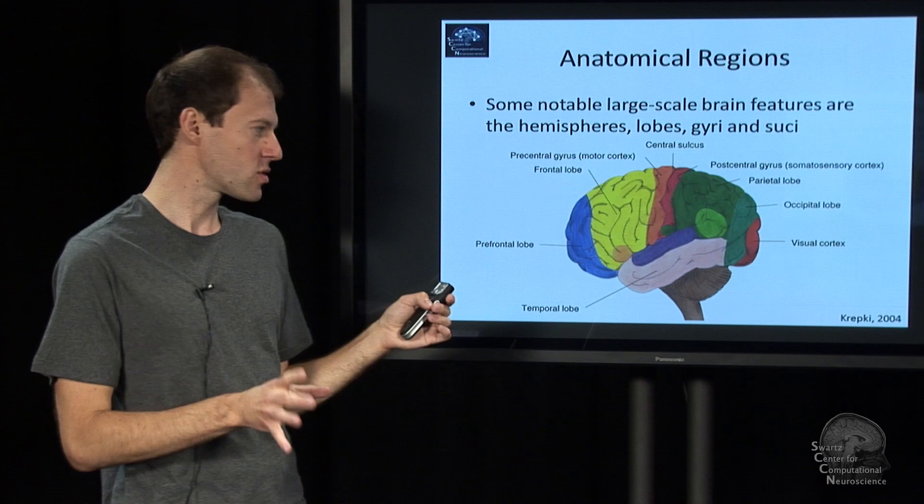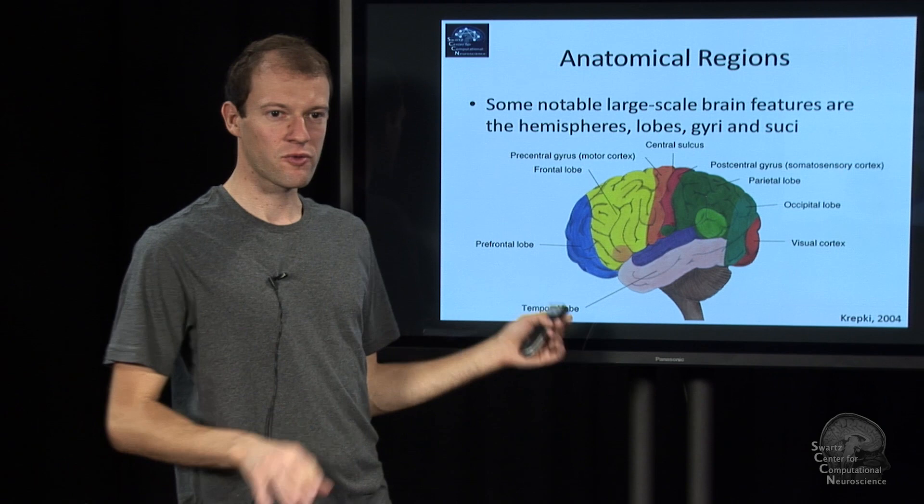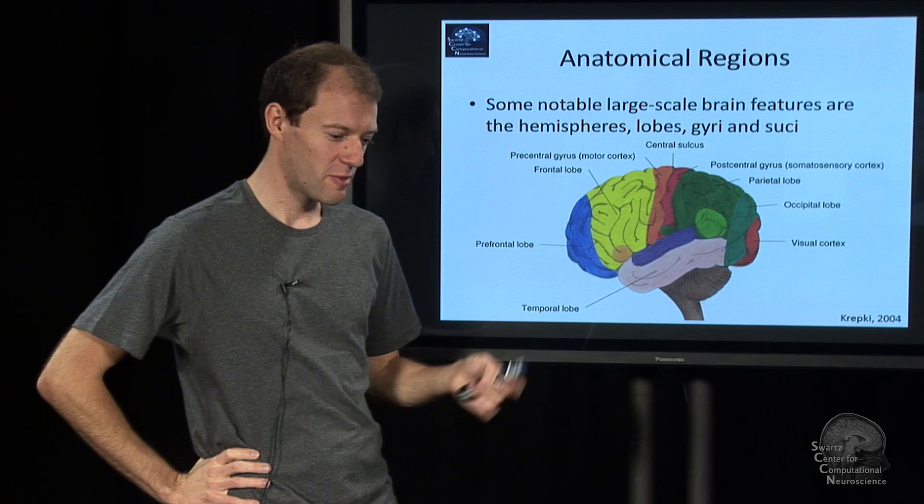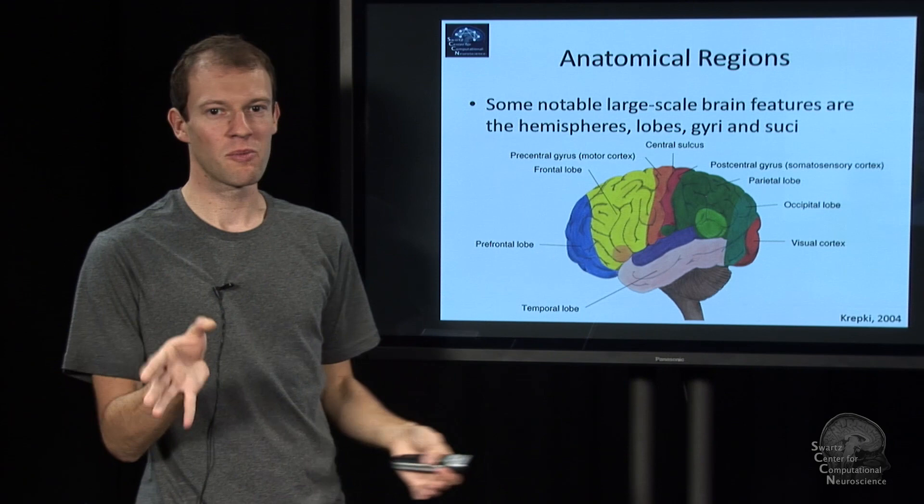And then there's areas in the brain which are very, very far away from anything that's really sensory or motor or in any way concrete. Like the frontal lobe, there's no nerve coming from the body anywhere near this. And so we don't really know, the literature goes all over the place when it comes to what this part of the brain is doing. But what we know is it's probably going to be more abstract.